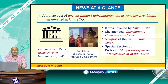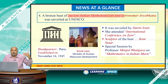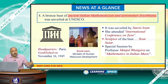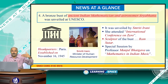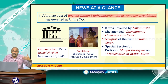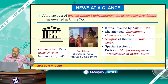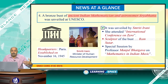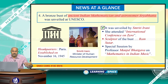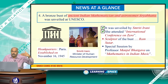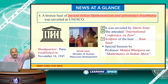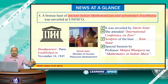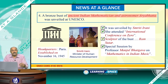China asked the participating countries to provide lists of possible terror groups and terrorists who may try to disrupt the event. A bronze bust of ancient Indian mathematician and astronomer Aryabhata was unveiled at UNESCO. UNESCO headquarters is in Paris, established on November 16, 1945. It was unveiled by our Minister for Human Resource Development Smriti Irani, who also attended an international conference on zero. The sculptor of the bust is Ram Suthar. A special session by famous mathematician Professor Manjul Bhargava was also held on mathematics in Indian music.